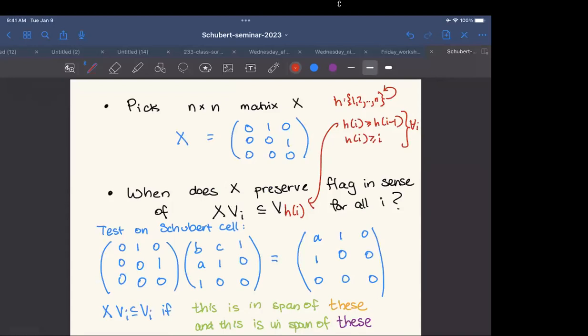Then if we do this, I'm going to pick a specific function. We're going to take H of I equals I plus 1, and H of 3 equals 3. So we're going to test on this specific Schubert cell, this specific set of containment conditions. Here we're asking, does X send the I part of the flag into the I plus first part of the flag? Let's just go through what it's saying for each of the vectors.